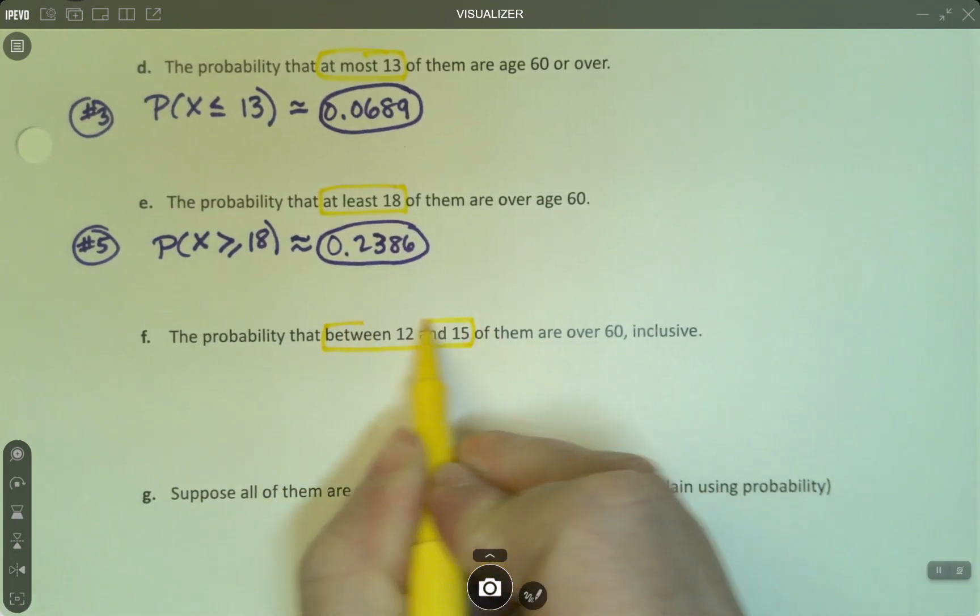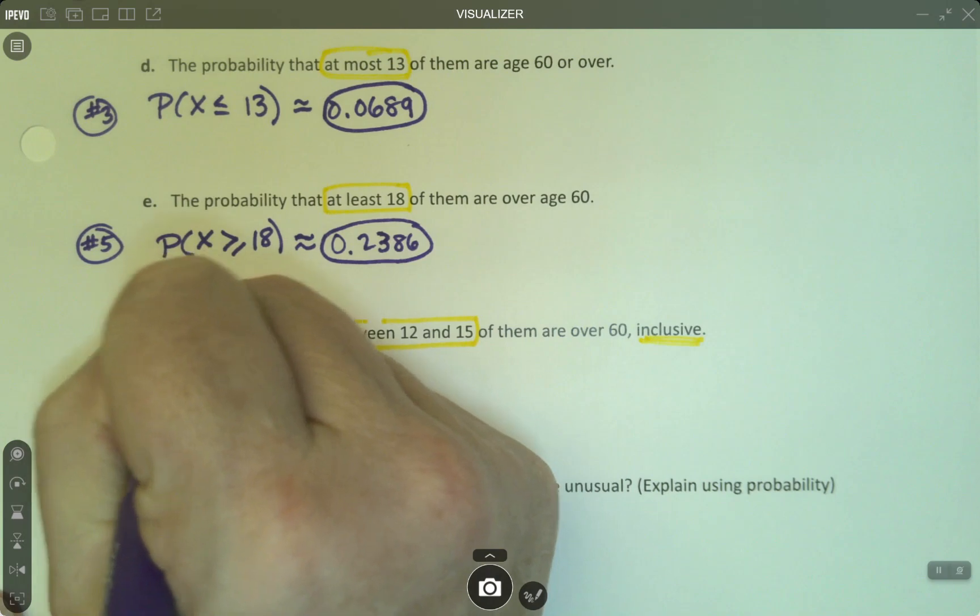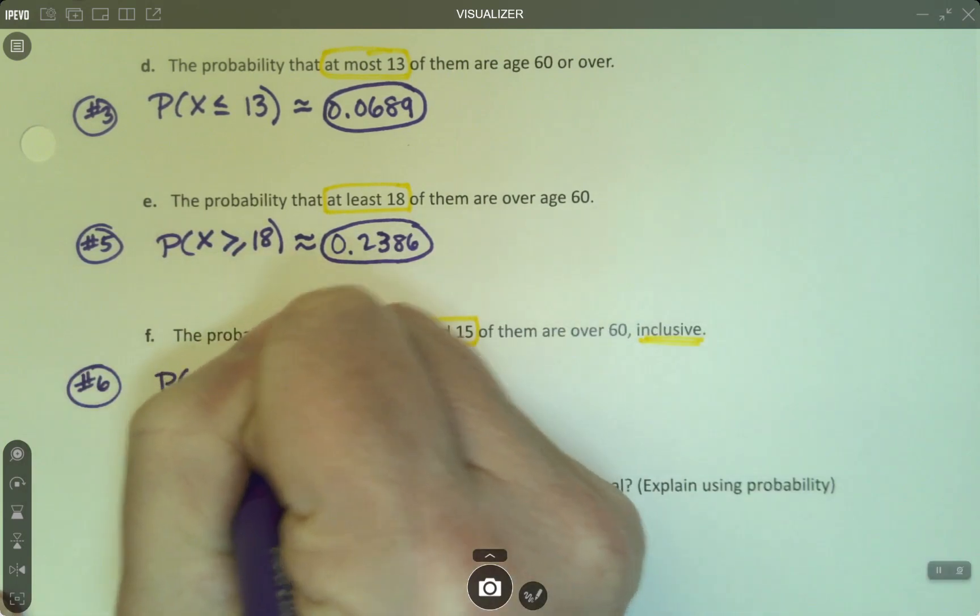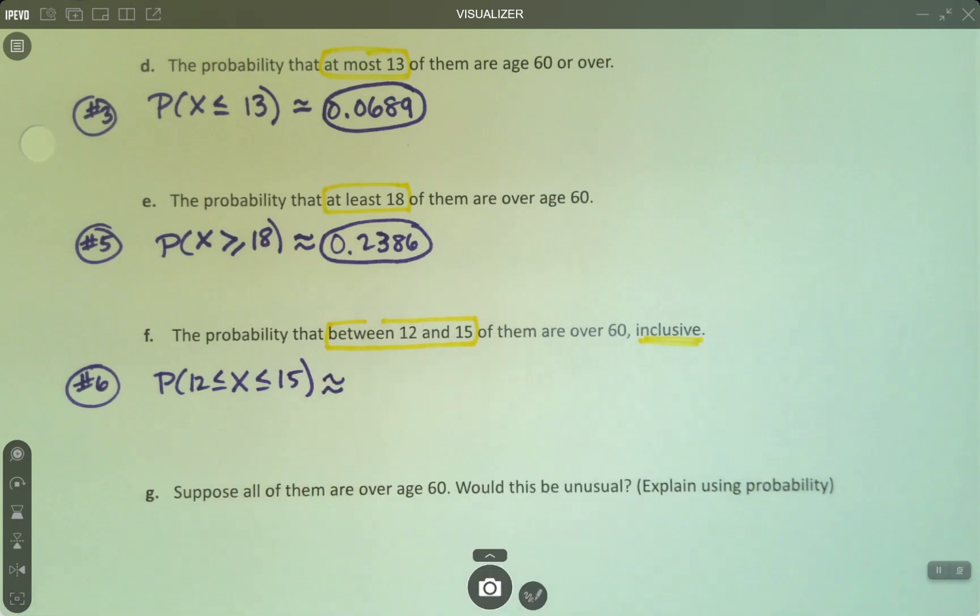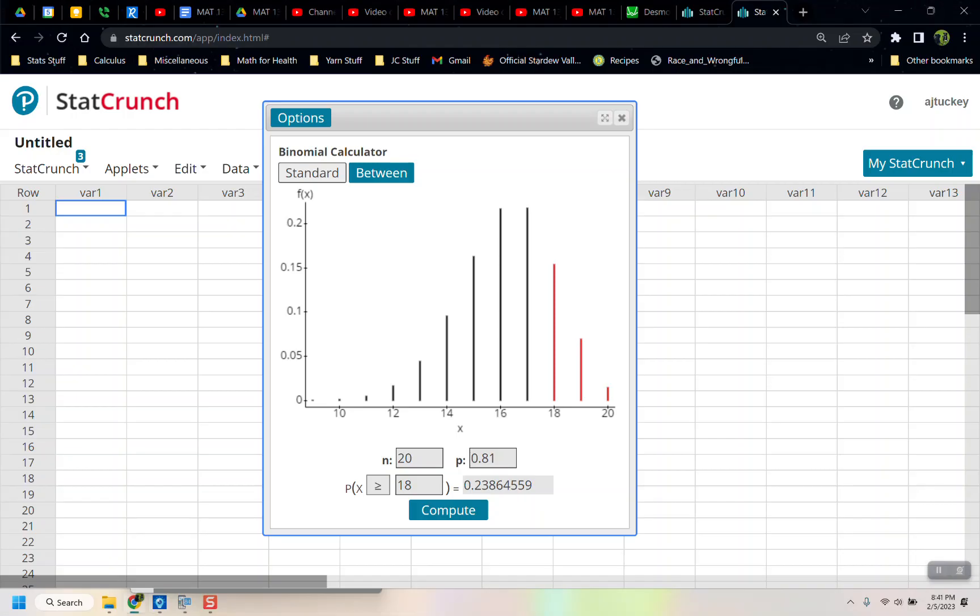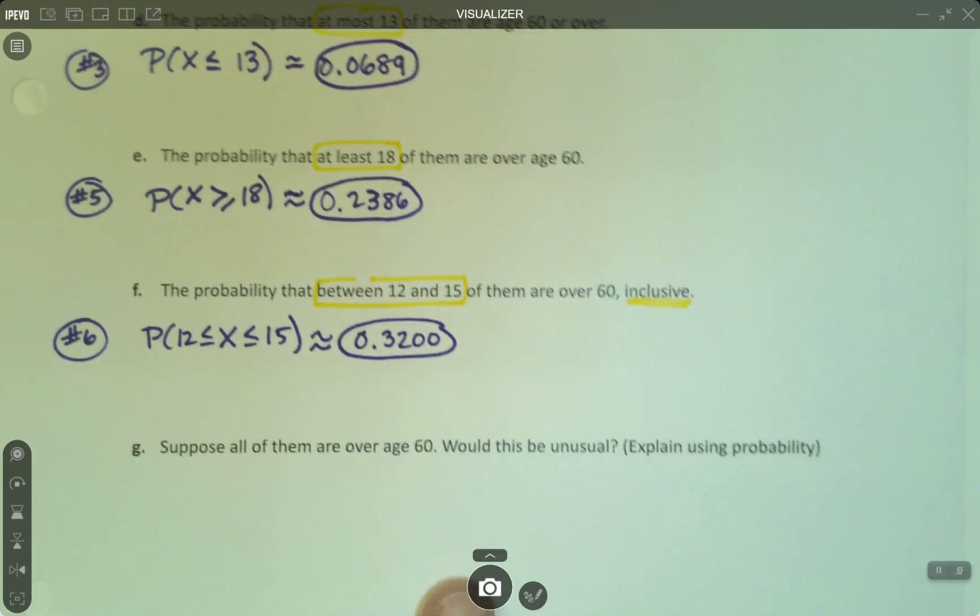So it's got that between 12 and 15. It has the inclusive bit. So that's the last one, that's number six. I want the probability that 12 is less than or equal to X, which is less than or equal to 15. Inclusive just means 12 and 15 are included. They have the or equal to bars on them, which is the way we're always going to do these problems anyway. I'm not going to mess with you. So I'm going to click between, so now that one's the gray one. I'm going to change this to 12 here and 15 here and say compute. And I get 0.3200. Like that, lovely.